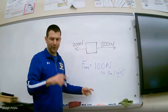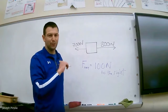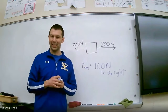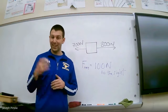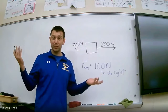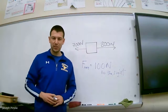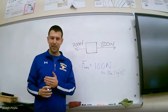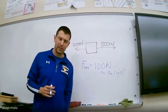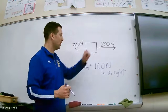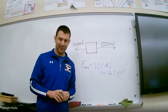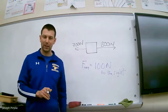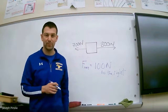Anytime there's a net force, the forces are unbalanced and the object will accelerate. That's why the fridge accelerated—it changed its speed from 0 meters per second to some moving speed. Let's now take a look at what that looks like on the computer simulation.